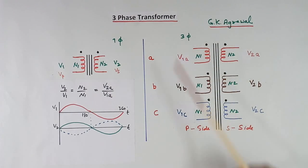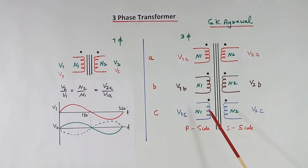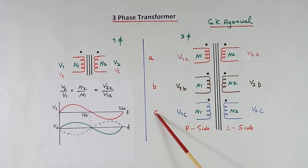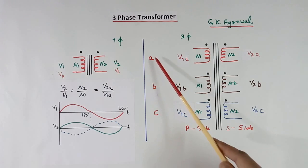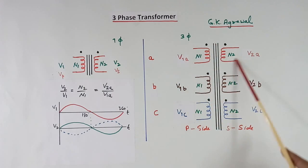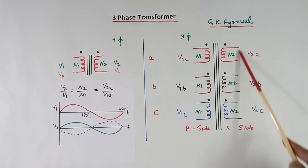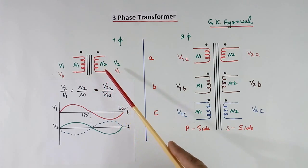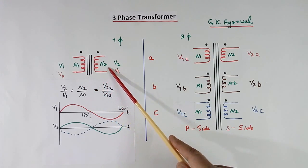This is the symbol of a 3-phase transformer. It has 3 phases, called A, B, C — also called RYB in industry. Each phase, say phase A, is exactly equivalent to a single-phase transformer in all characteristics.